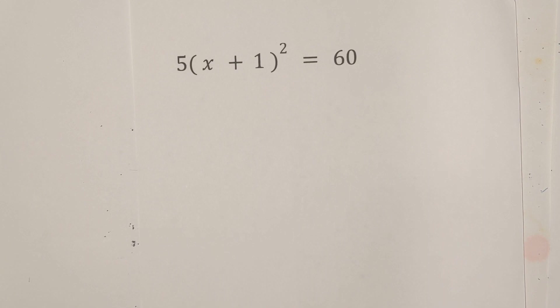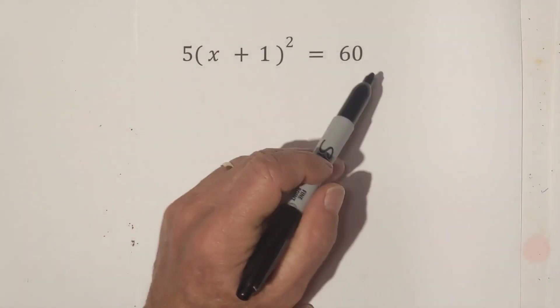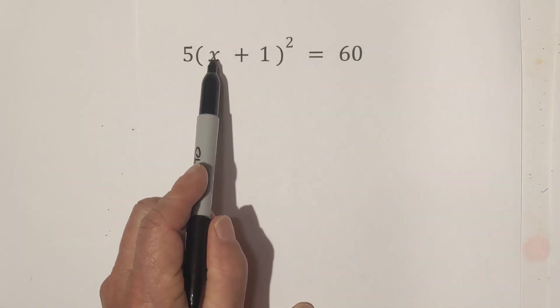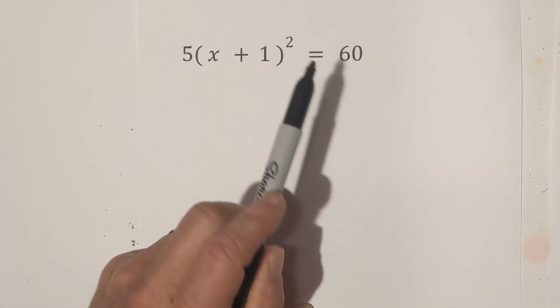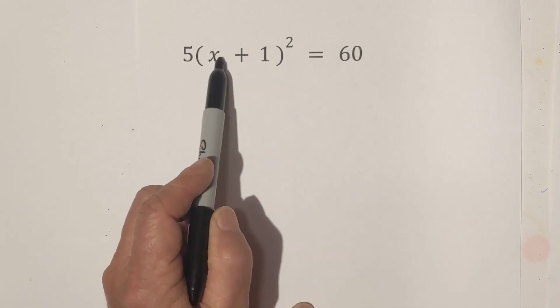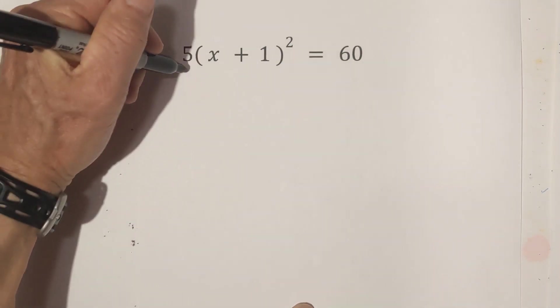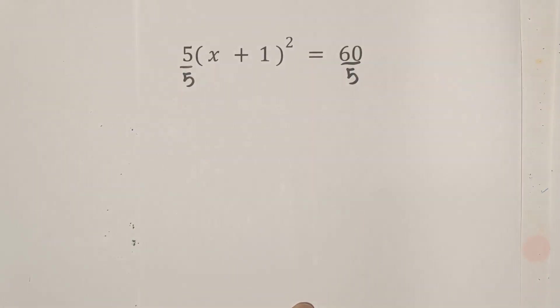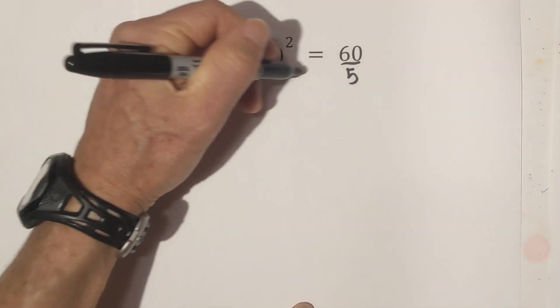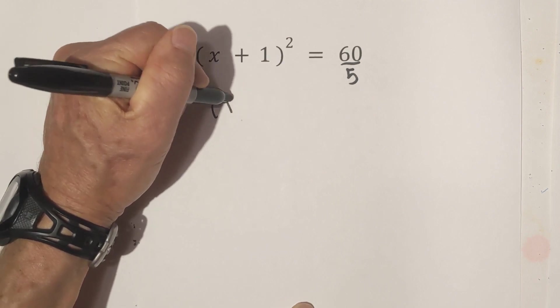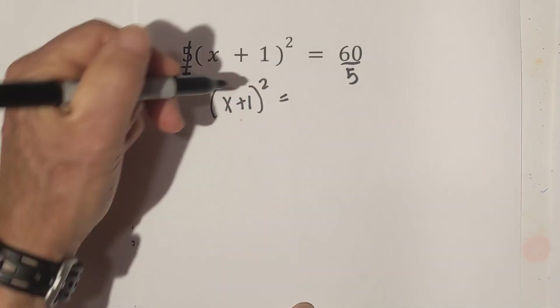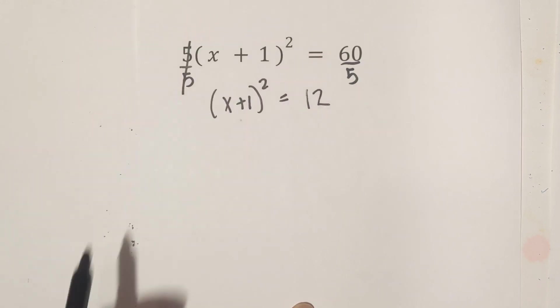This example has a little bit of everything in it. So let's get started. First, we want to get x by itself. The square root is attached to x plus 1. So we need to get rid of the 5. So I'm going to divide both sides by 5. These cancel. So we have x plus 1 squared equals 60 divided by 5 is 12.